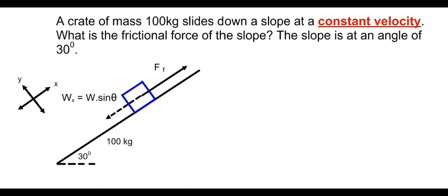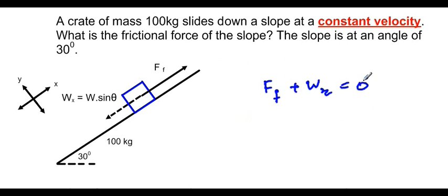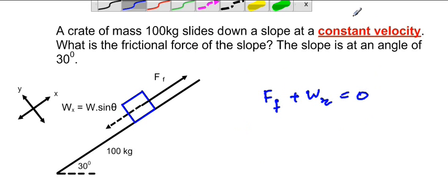Because the object is moving at constant velocity, we can say that the frictional force plus the x-component of weight is equal to zero. When we have constant velocity, we know that F_net equals zero — the net force acting on an object is zero. So because this object has constant velocity, the frictional force and the x-component of weight must sum to zero.